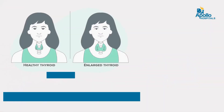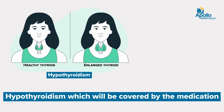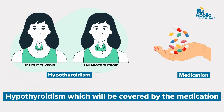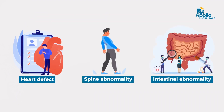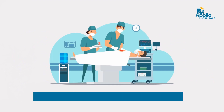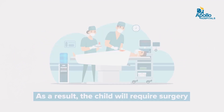The third modality is medical management. Most of these children have some amount of hypothyroidism, which is covered with medications. And if the child is having some underlying heart defects, spine abnormality, or an abdominal intestinal abnormality, the child will require surgery for the same.